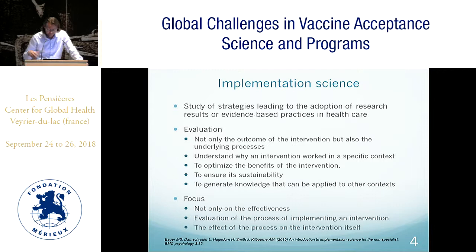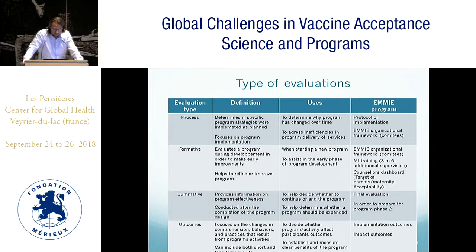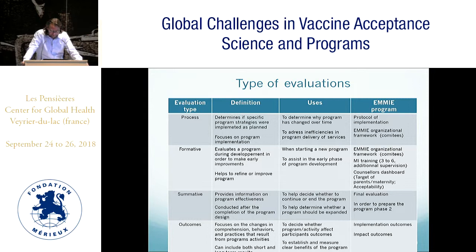The focus is not only on the effectiveness of interventions but also on the evaluation of the process of implementing interventions and the effect of that process on the intervention itself. There are several types of evaluations. Process evaluations determine whether a specific program strategy was implemented as planned, focusing on program implementation and addressing why a program has changed over time or addressing inefficacy in service delivery. Formative evaluations help refine or improve a program during development in order to make early improvements — useful when starting a new program.